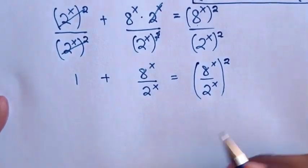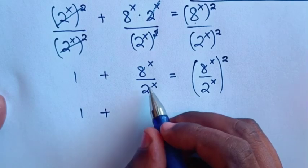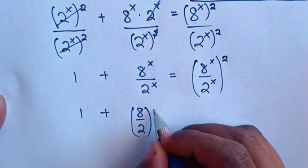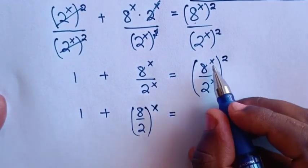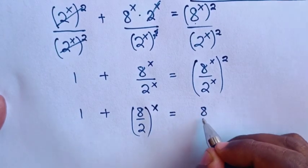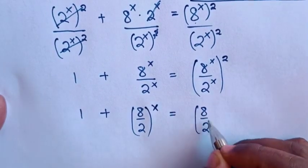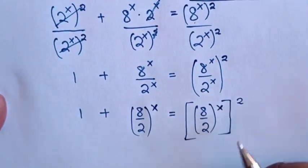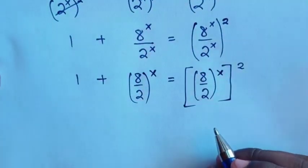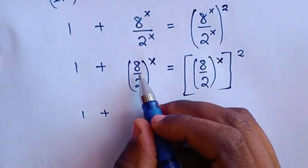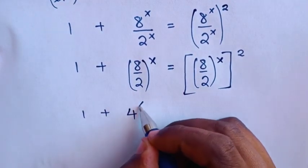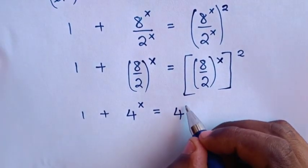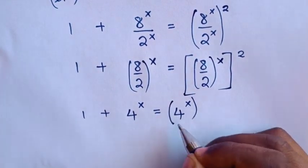Our equation becomes 1 plus (8/2)^x equals (8/2)^(2x). Since 8 over 2 is 4, this simplifies to 1 + 4^x = (4^x)^2.